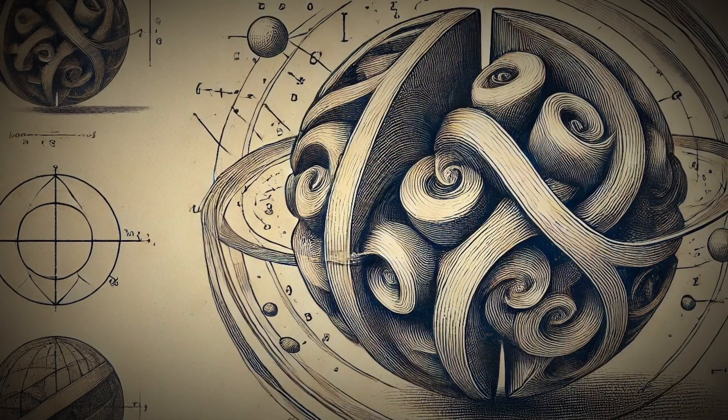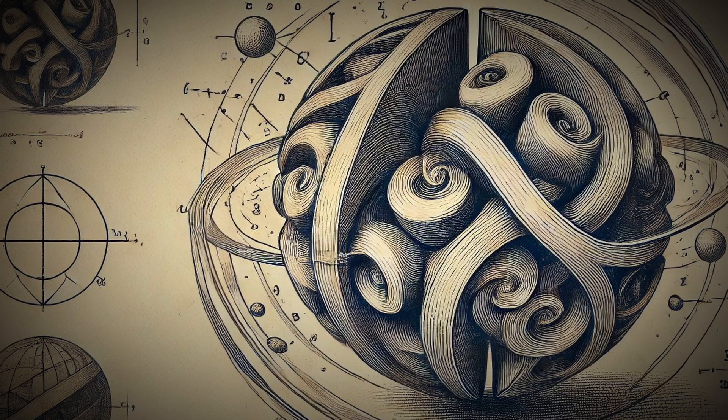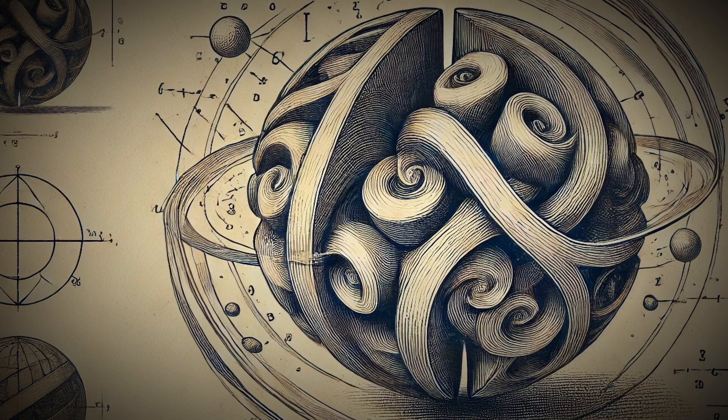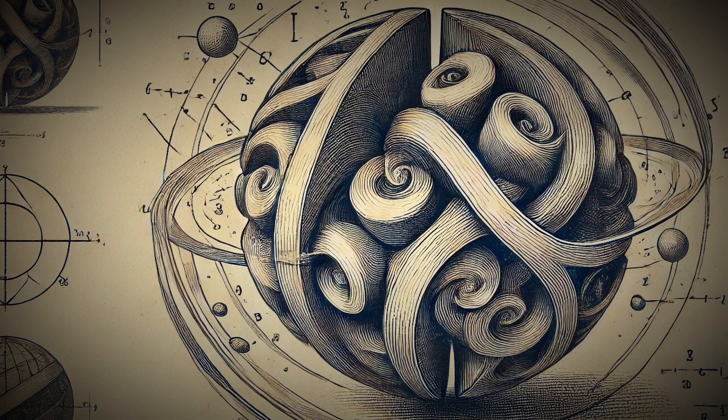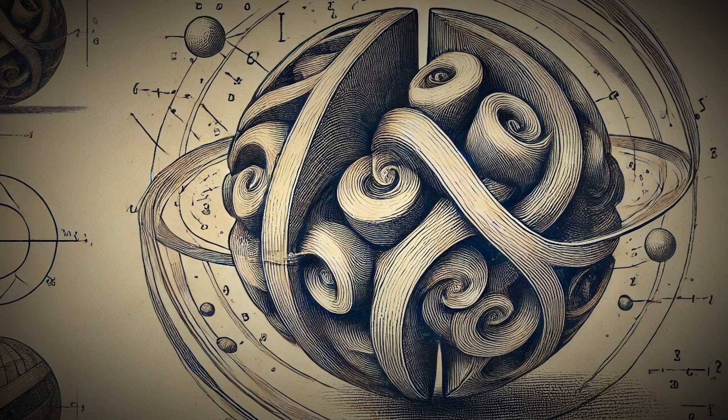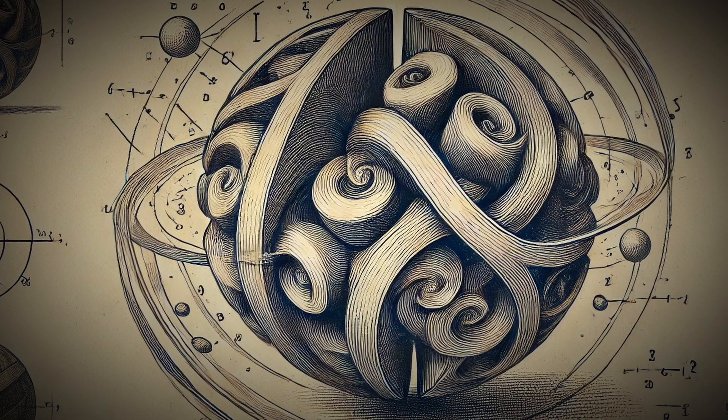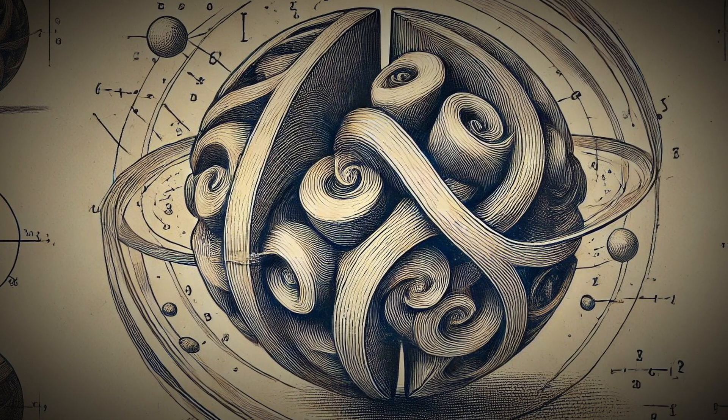The Banach-Tarski paradox is a result from set theory and geometry that shows under certain conditions, a solid sphere can be divided into a finite number of pieces and then rearranged into two identical spheres, each the same size as the original. However, the pieces involved are highly unusual.